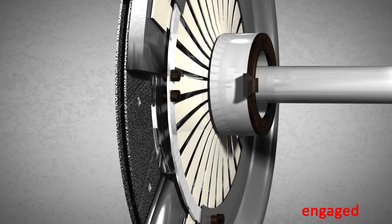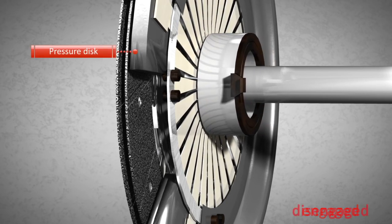Consequently, the clutch is disengaged because the pressure disc is mounted in a flexible manner to the casing.